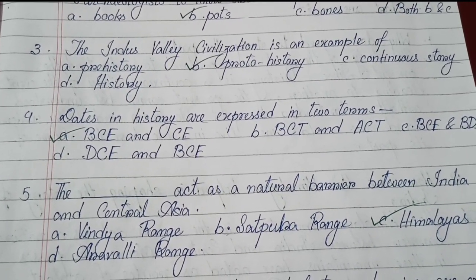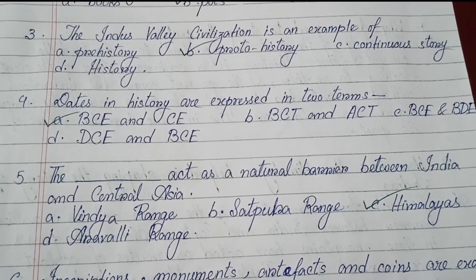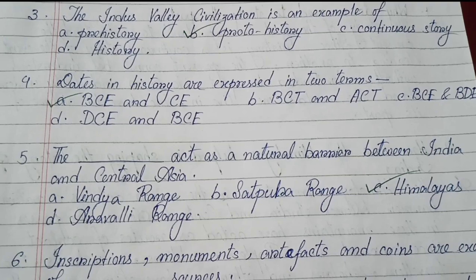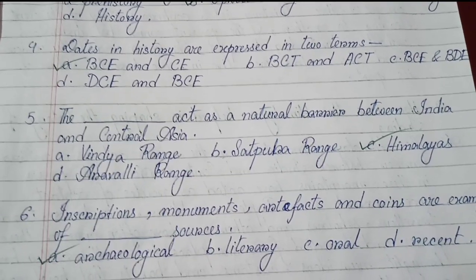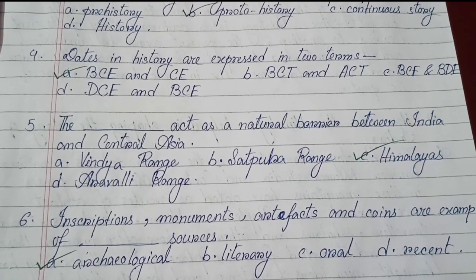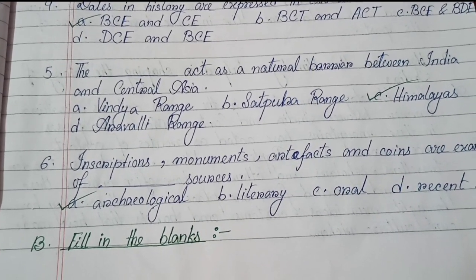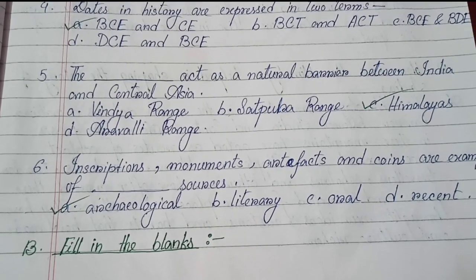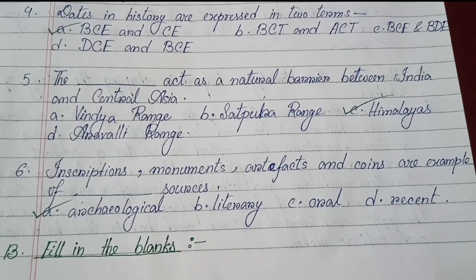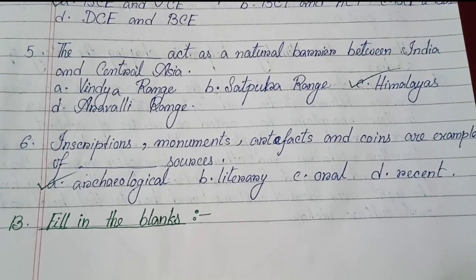Number four: Dates in history are expressed in two terms — options are BCE and CE, BCT and ACET, BCE and BDE, DCE and BCE — the answer is A: BCE and CE. Number five: The Himalayas act as a natural barrier between India and Central Asia — answer is Himalayas. Number six: Inscriptions, monuments, artifacts, and coins are examples of — answer is A: archaeological sources.